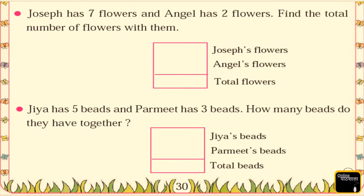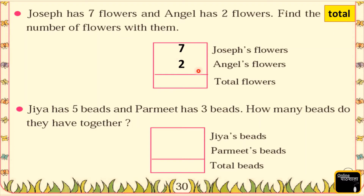Now question 3. Joseph has 7 flowers and Angel gave 2 flowers. Find the total number of flowers with them. When we see the word 'total,' what do we do? We add the 2 numbers. Joseph has 7 flowers and Angel has 2 flowers. Total means we put a plus sign here — so tell me, 7 plus 2 is equal to?